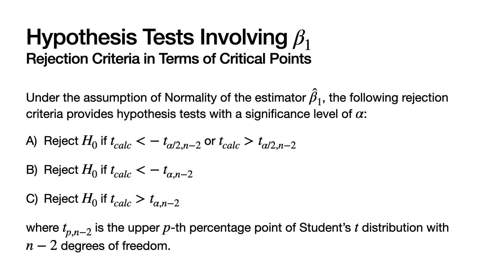T_{p, n-2} is the upper p-th percentage point of Student's t-distribution with n minus two degrees of freedom. So T_{alpha/2, n-2} is the upper alpha over two percentage point of Student's t-distribution with n minus two degrees of freedom, and T_{alpha, n-2} is the upper alpha percentage point of the t-distribution with n minus two degrees of freedom.